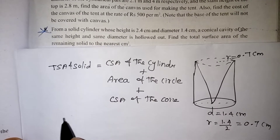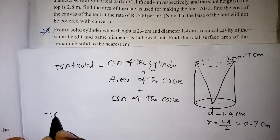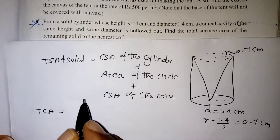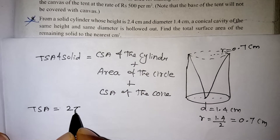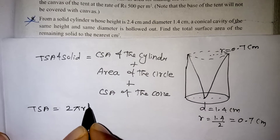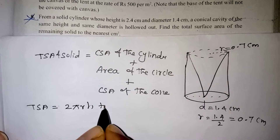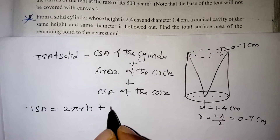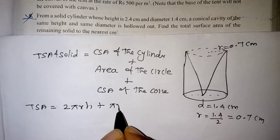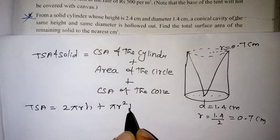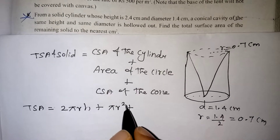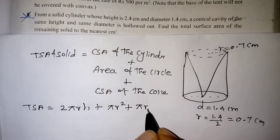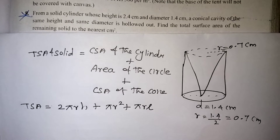Now let us write the formula for all three. TSA of the solid equals: CSA of the cylinder, which is 2πrh, plus the area of the circle at the bottom, which is πr², plus the CSA of the cone, which is πrl. All three of these we have to add.